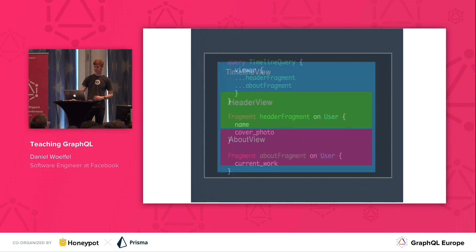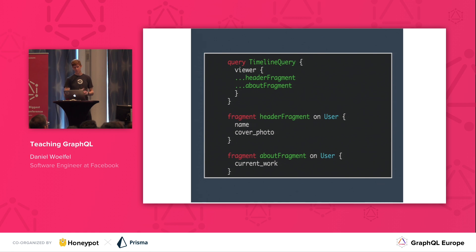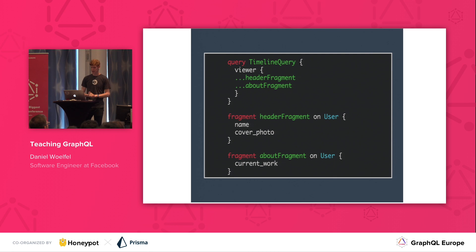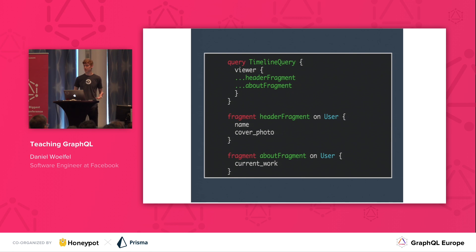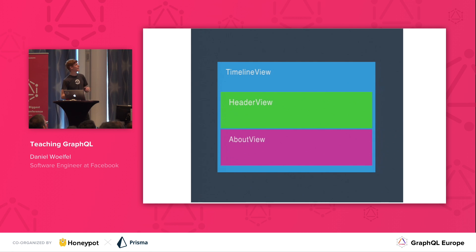Now that we have this view hierarchy, how do we structure our data? We show students these fragments — you can put your header fields in the header fragment and your about fields in the about fragment, then combine them. The timeline query has no idea what's in the header or about fragment. That tells people how it works, but we can motivate the concept much more if we show them the alternative.